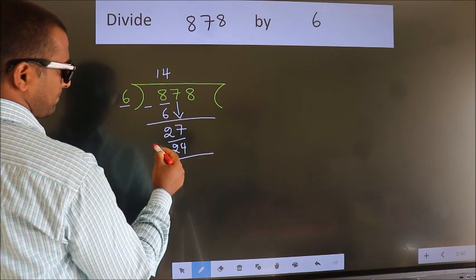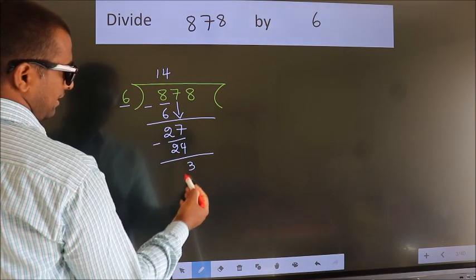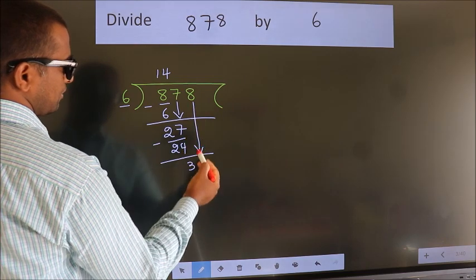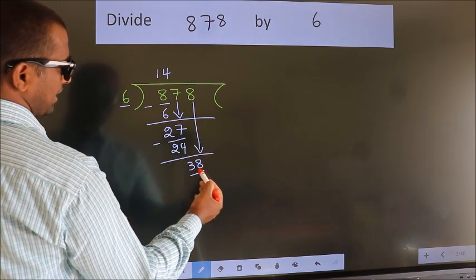Now we subtract and get 3. After this, bring down the next number. So, 8 down, making 38.